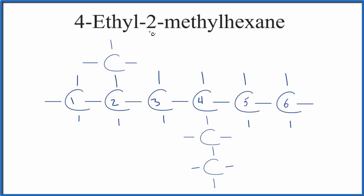This is the structure for 4-ethyl-2-methylhexane. We have our hexane - six carbons single-bonded with hydrogens around them. On the second carbon, we have the methyl group, and on the fourth carbon, the ethyl group. This is Dr. B with the structural formula for 4-ethyl-2-methylhexane. Thanks for watching.